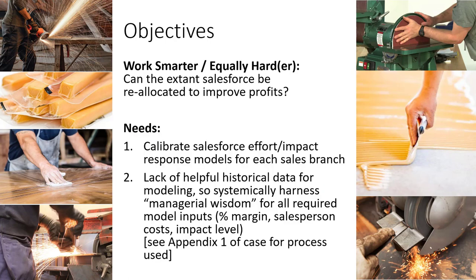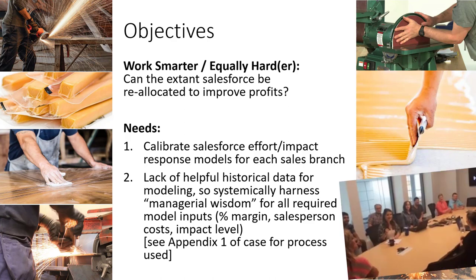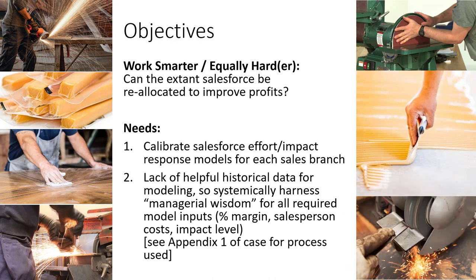The objective of this project is to see if we can work smarter and equally harder — can the existing Salesforce be reallocated to improve profits? To do this, we first need to calibrate the Salesforce effort and impact response models for each of the 14 sales branches. Our unit of effort is the number of salespeople, and our impact is sales. Rather than using historical data, they harnessed managerial wisdom to establish all required modeling input.